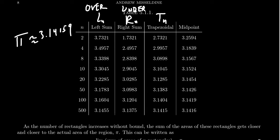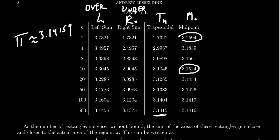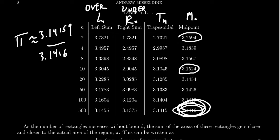The midpoint rule: with 2 rectangles, 3.2; with 10, 3.15 — really good; with 500, 3.1416. You might think the trapezoid rule did better because it gives 3.1415, but rounding π to three decimal places gives 3.1416 — so the midpoint rule is actually the winner, accurate to four decimal places.